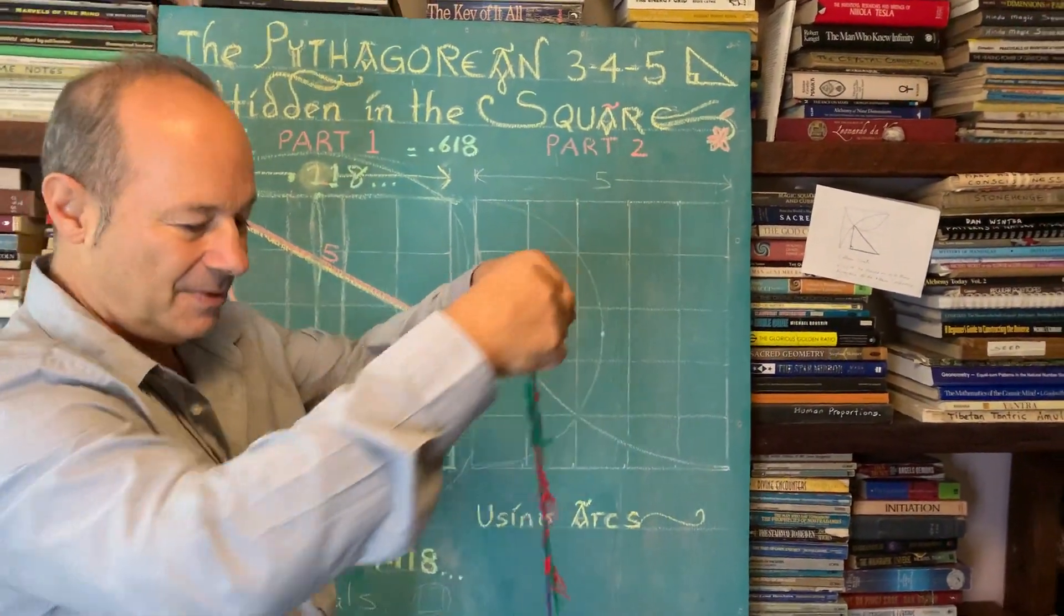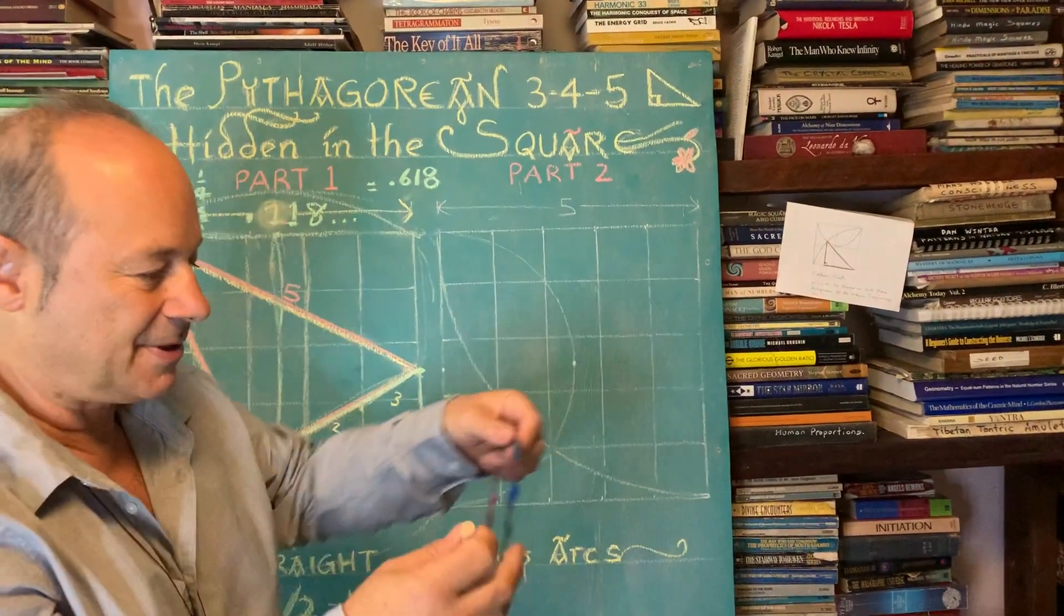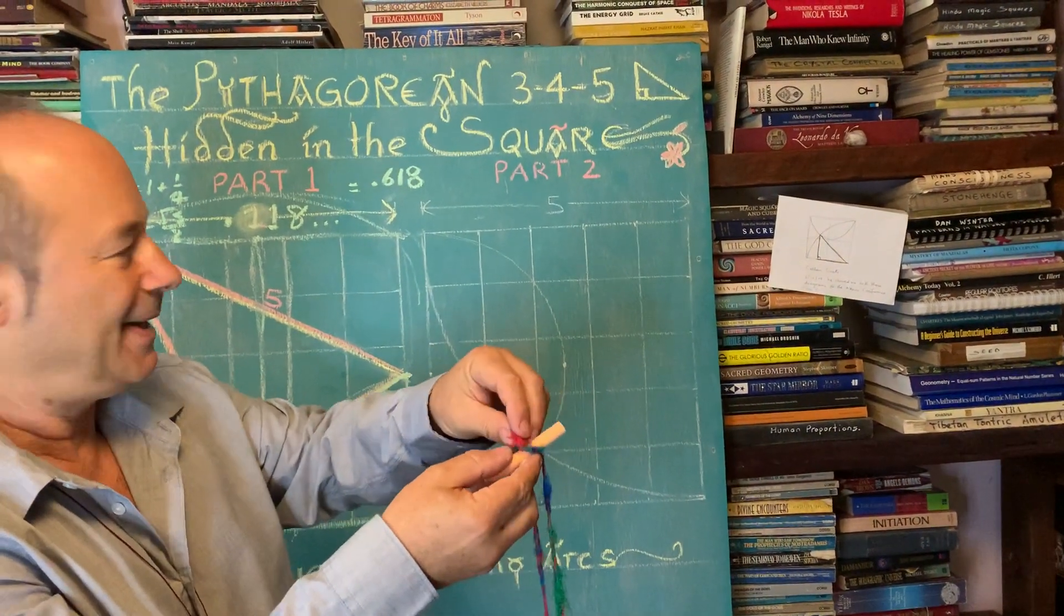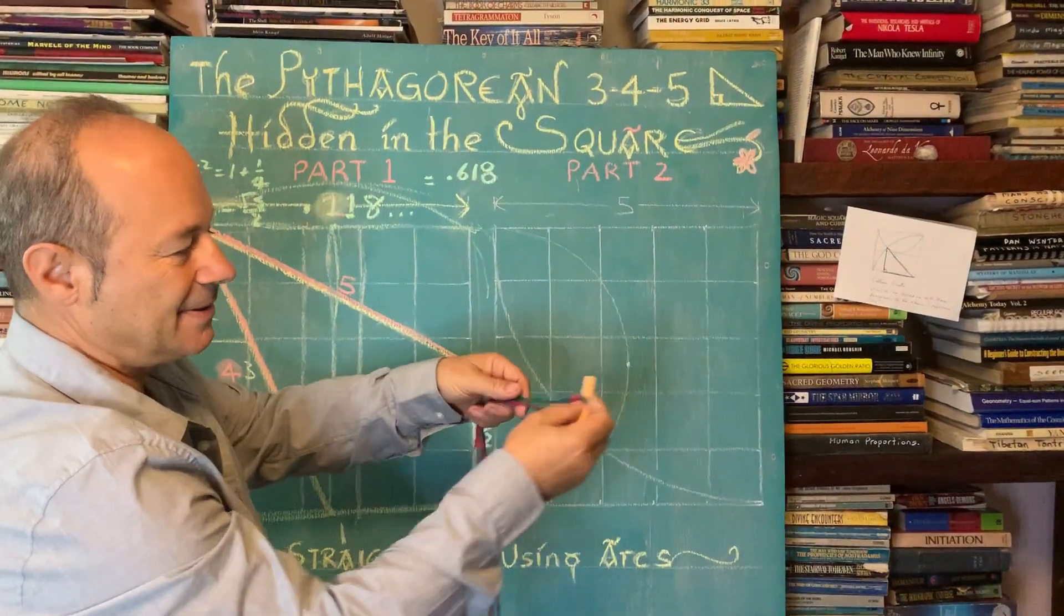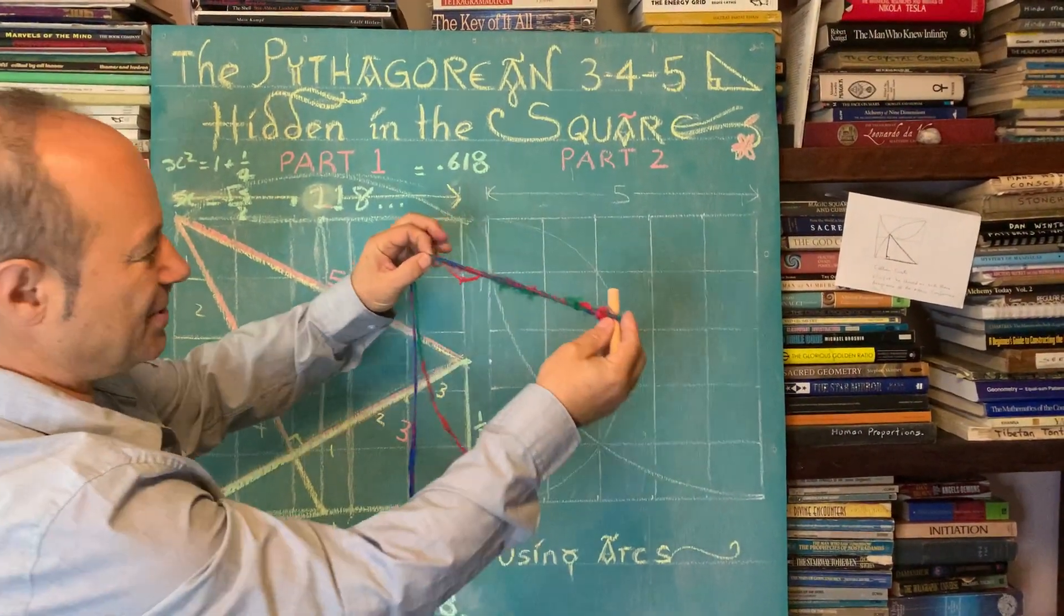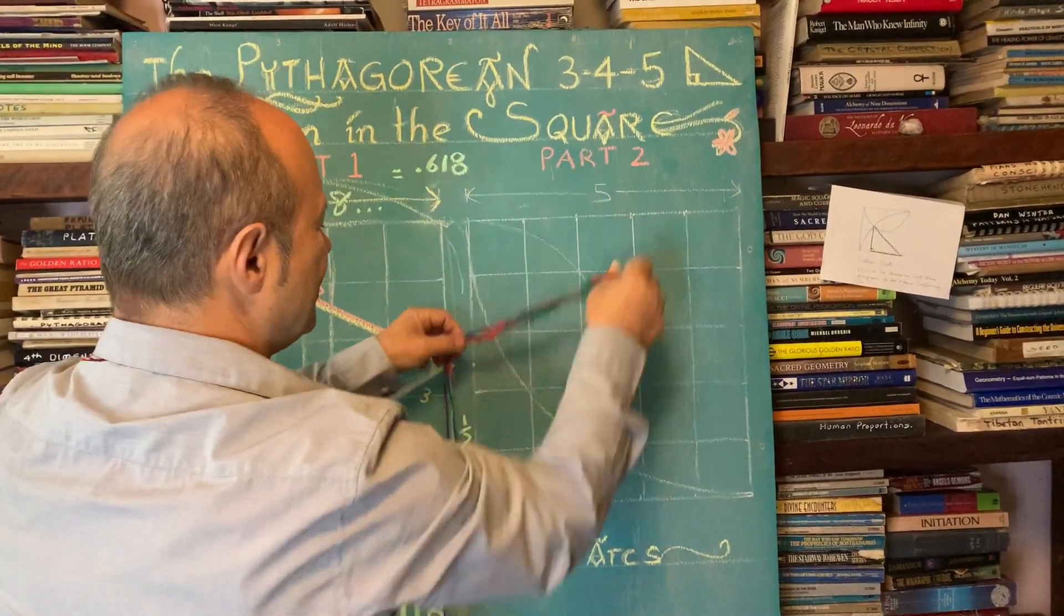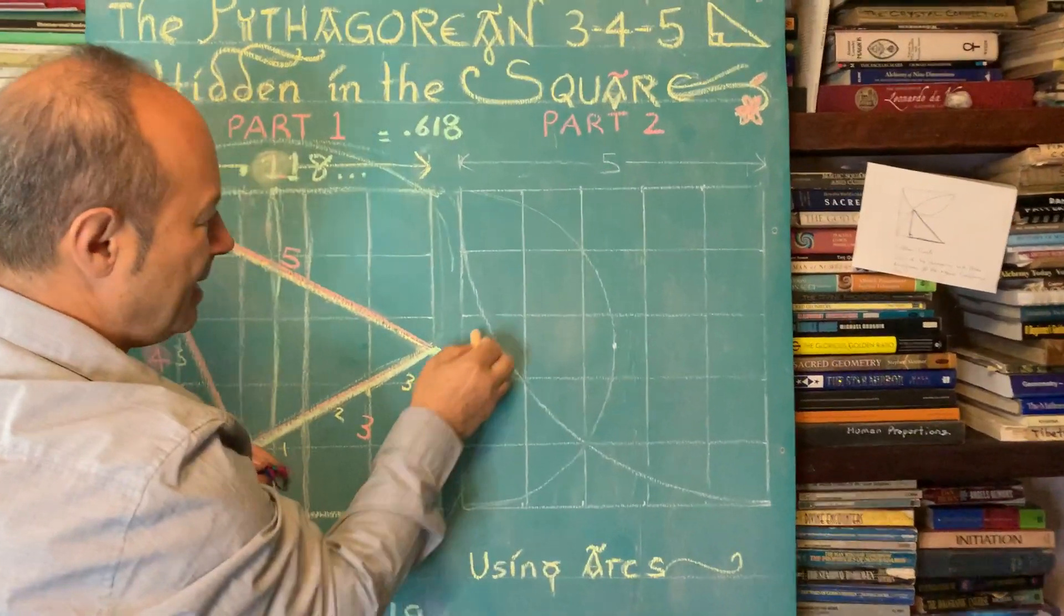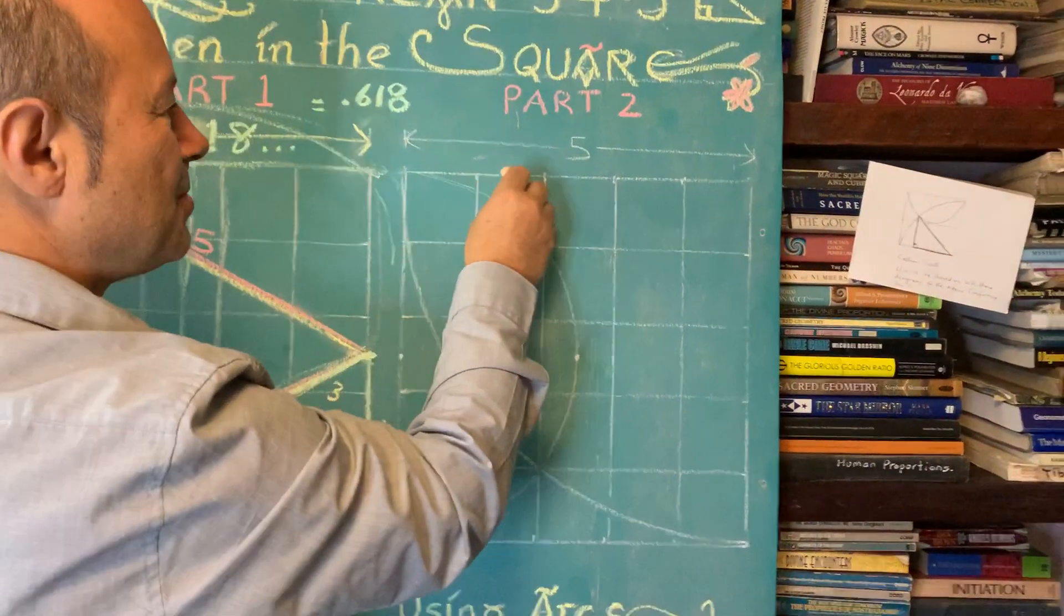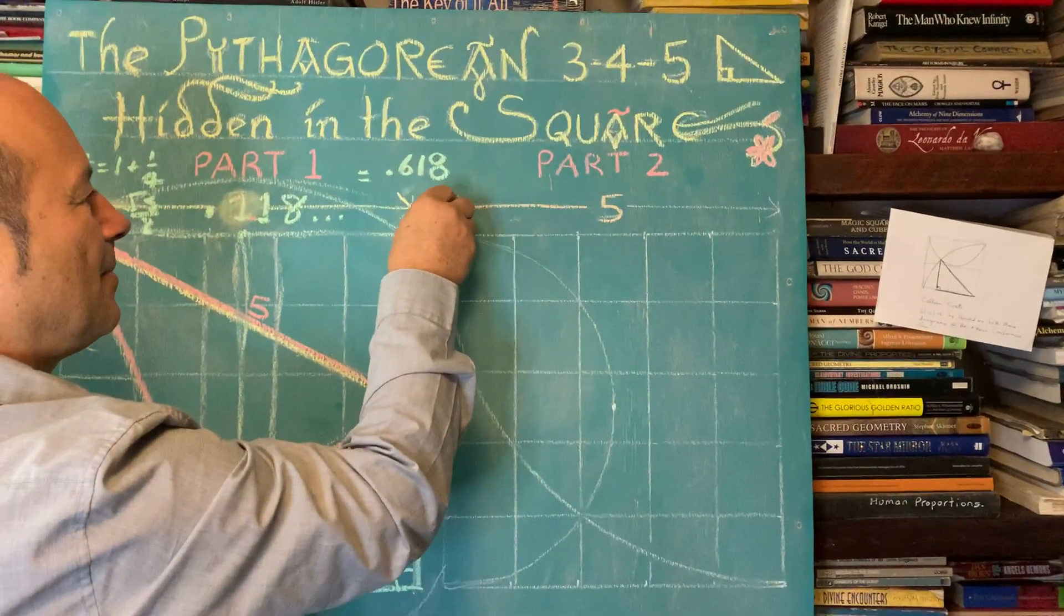I'm going to make it like a radius. By holding the string, I'm able to draw an arc at any distance I want. But first I need to know where my compass point is. This distance is five units, we'll call that five.